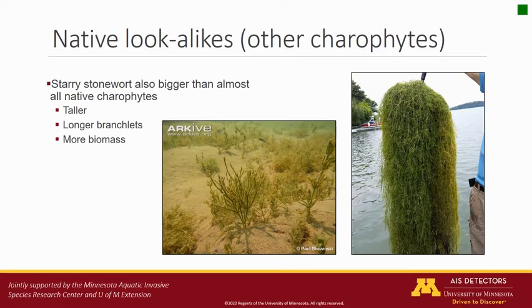Finally, starry stonewort is beefier than pretty much all of our native carophytes. It can grow taller, its branchlets are longer, and it produces denser biomass.